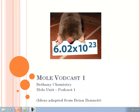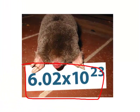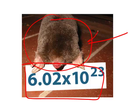Hello, this is a podcast or mole vodcast number one. In this particular vodcast we are going to talk about the mole, the basic properties of the mole in chemistry. And we're not talking about the mole that burrows in the ground — we're talking about the chemistry mole, which is 6.02 times 10 to the 23rd. On this podcast we're going to talk about that number and what exactly it means.